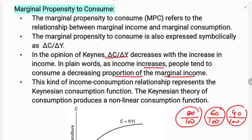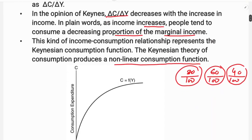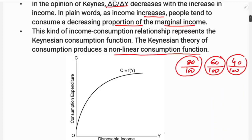The Keynesian theory of consumption produces a non-linear consumption function. Non-linear means the slope will change — that is, the marginal propensity to consume will change. If you look at the diagram, the Y-axis is disposable income, and the consumption expenditure is shown as the consumption curve. The consumption curve is of a changing slope.